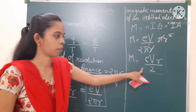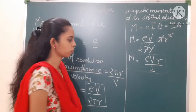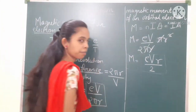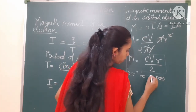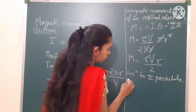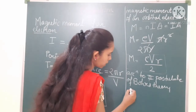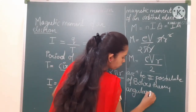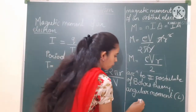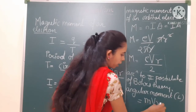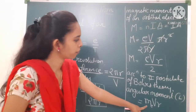Now we need to introduce another term — angular momentum. This idea is taken from Bohr's second postulate. According to Bohr's second postulate, the angular momentum L = mvr, where m is the mass of the electron, v is the velocity, and r is the radius. We need to introduce this term into our magnetic moment equation.